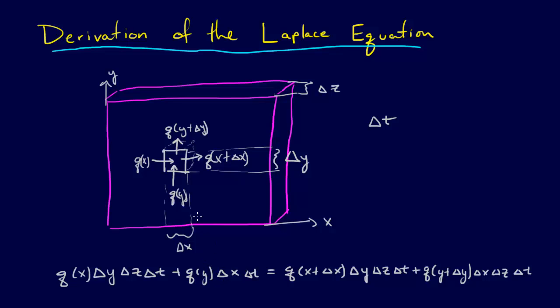Plus q of y delta x delta t. So that's in the y direction here. And then that's going to be equal to the flux going out. Q of x plus delta x delta y delta z delta t. Plus q of y plus delta y delta x delta z delta t. So that should make sense.